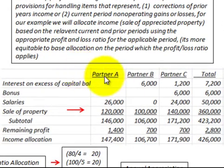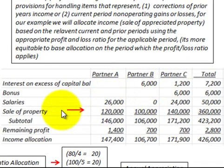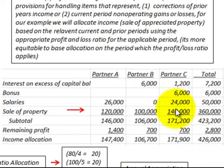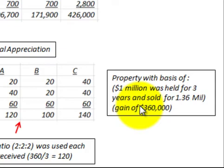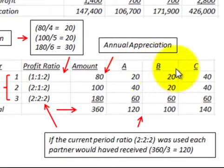In our example, we have partners A, B, and C. We're going to sell some property, and there's going to be a gain that will need to be allocated among the three partners. The property has a basis of $1 million, was held for three years, and sold for $1.36 million, giving us a gain of $360,000. We'll allocate this gain of $360,000 between partners A, B, and C.